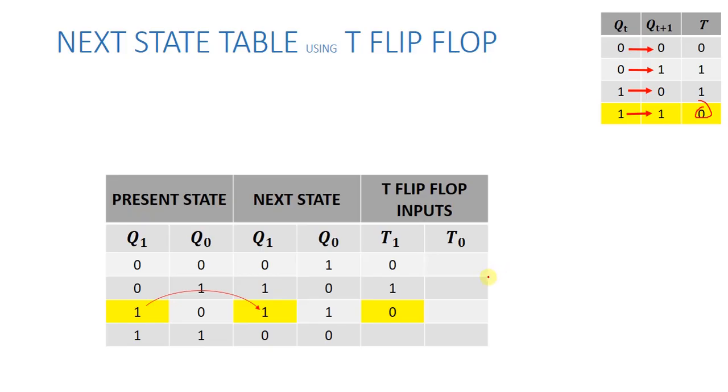T0 will be 0. Next state is 0. Present state 1, 1; next state is 0, 0. Present state 1 and next state is 0 according to excitation table of T flip-flop. What will we give as input? We give 1.